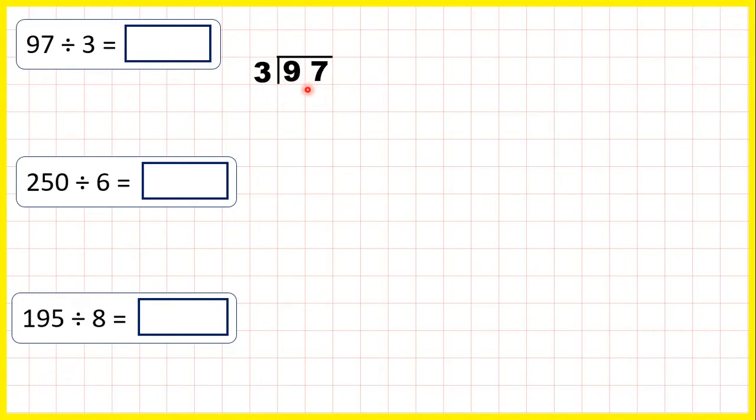So for 97 divided by 3, we can start with 9 divided by 3. That's exactly 3, because 3 times 3 is 9, so we don't have a remainder. But now for 7 divided by 3, we get 2 remainder 1. That's because 2 times 3 is 6, but then we need one more to get to 7. So 97 divided by 3 is 32 remainder 1.